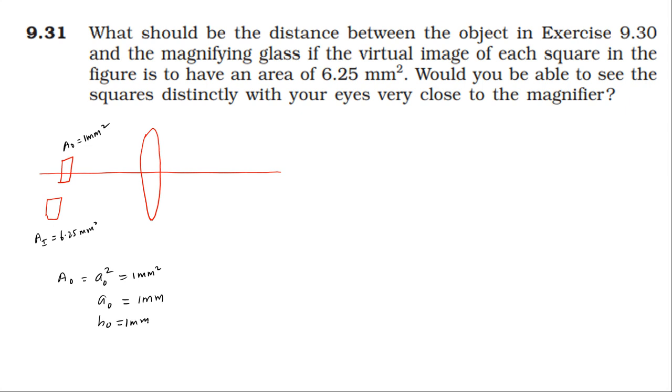It is 6.25 millimeter square. Taking the root, the image side is 2.5 millimeters. The height of the image is 2.5 millimeters. Now the magnification formula: magnification equals image height by object height, which is 2.5 divided by 1 millimeter. Millimeters cancel out, magnification is 2.5.